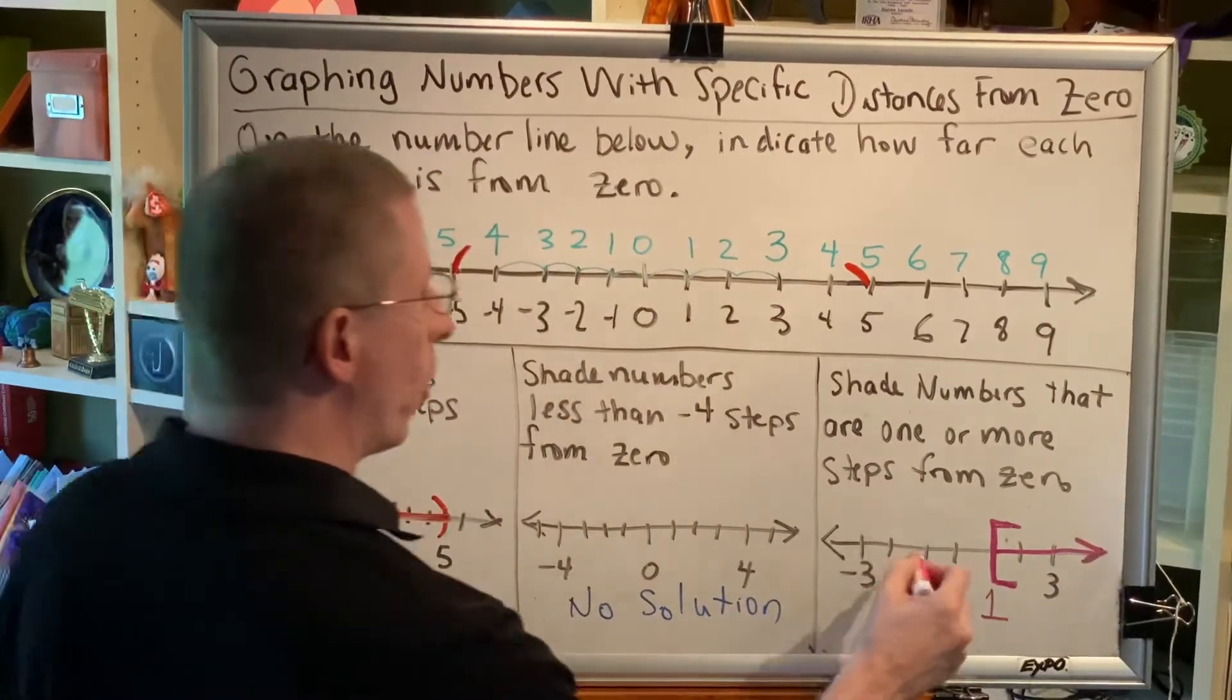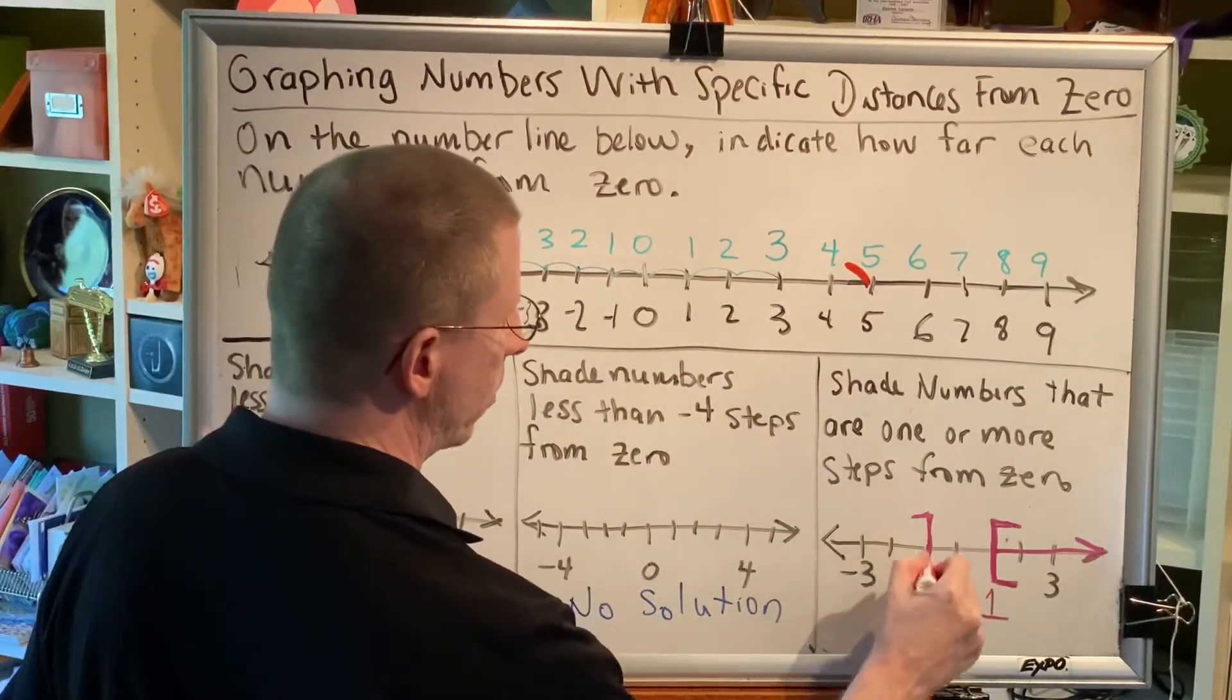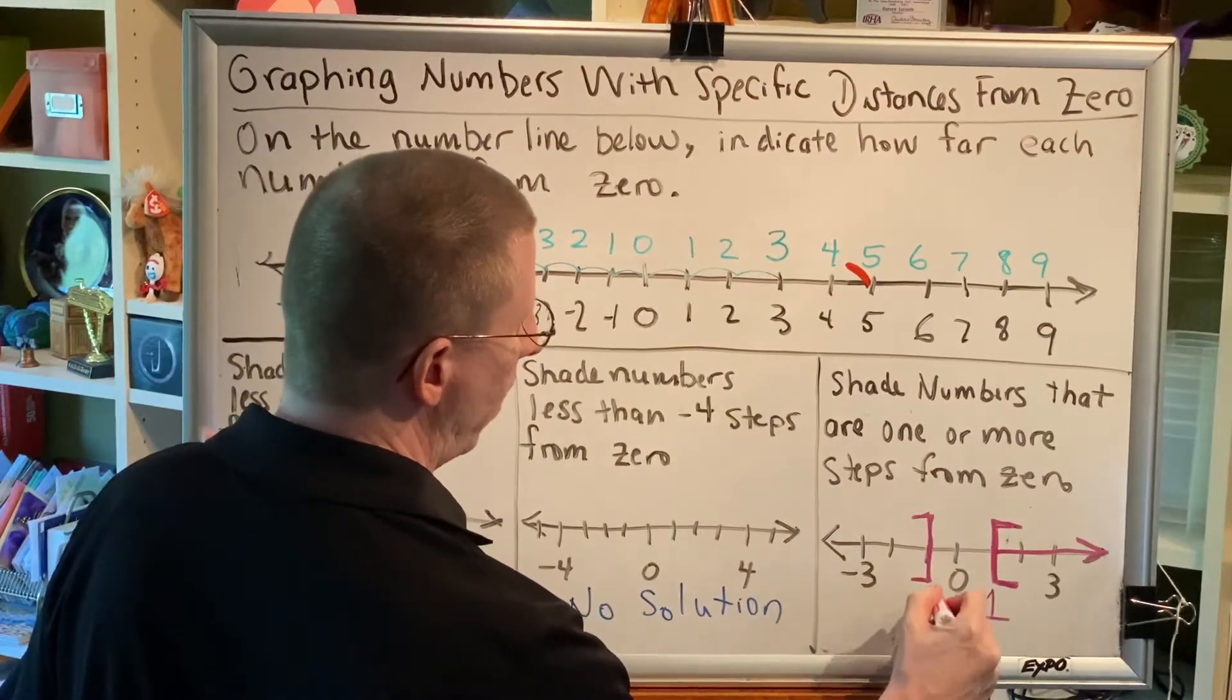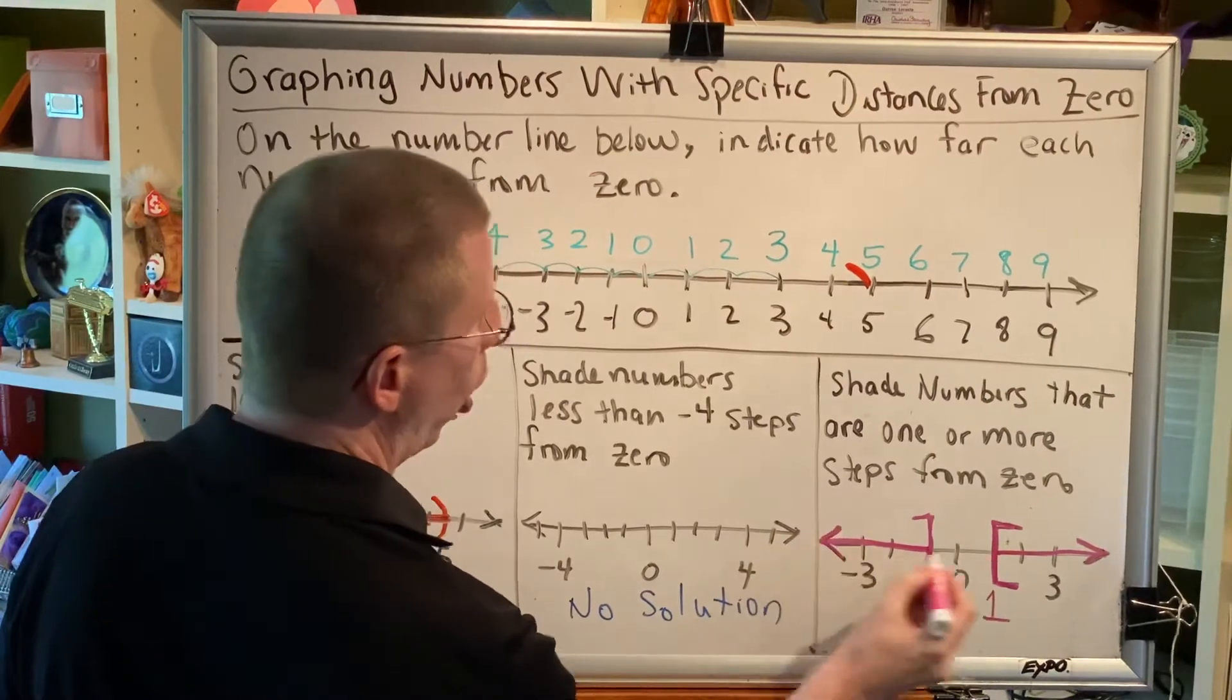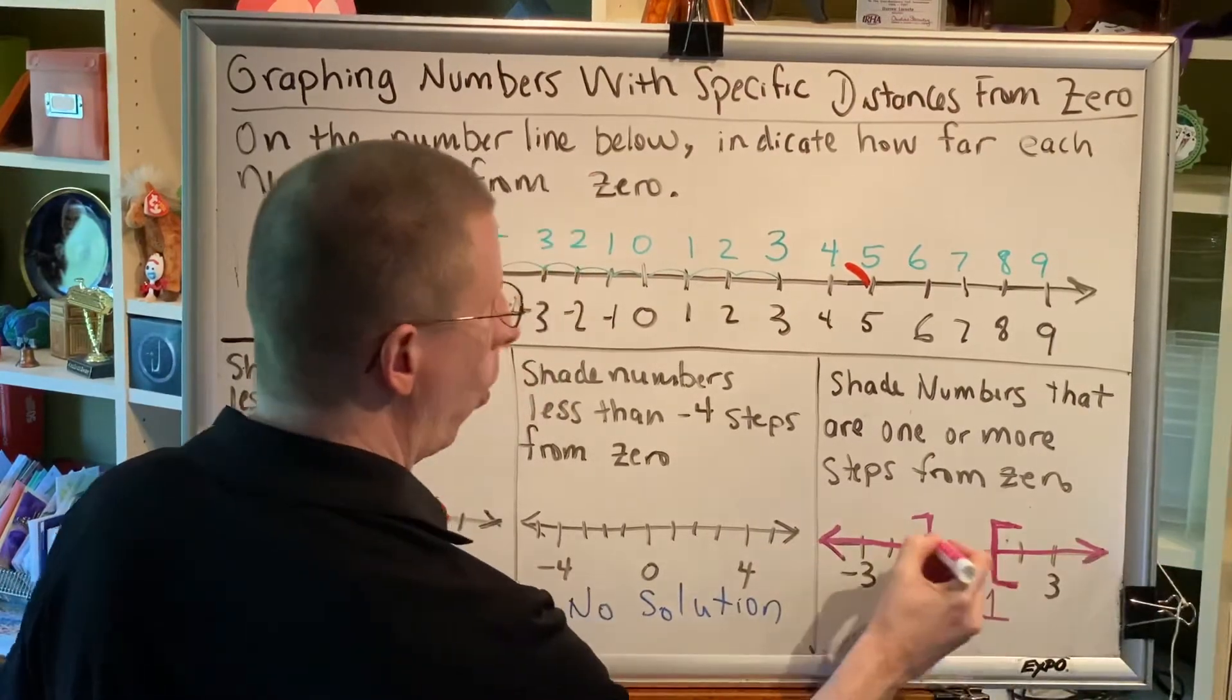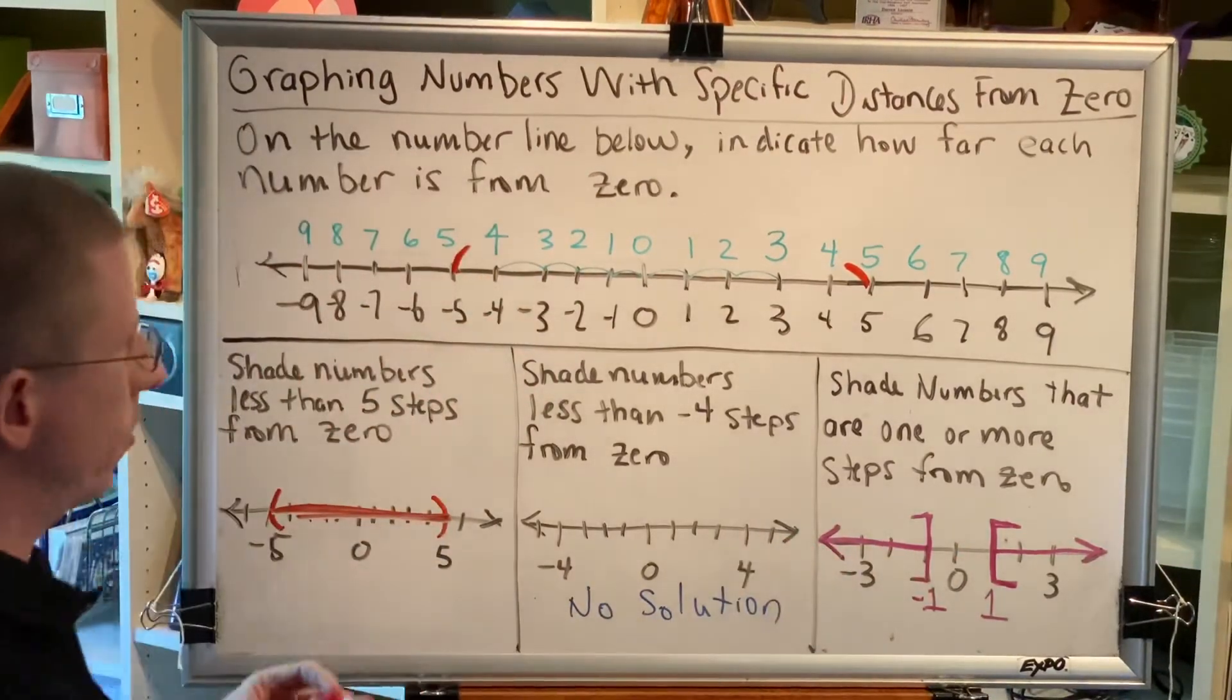Or I could go exactly one step to the left, where I'm at negative 1, and then anything beyond that would be more. One or more, one or more, one or more steps from zero.